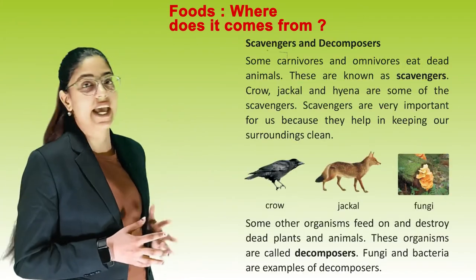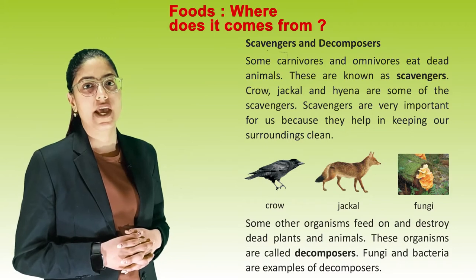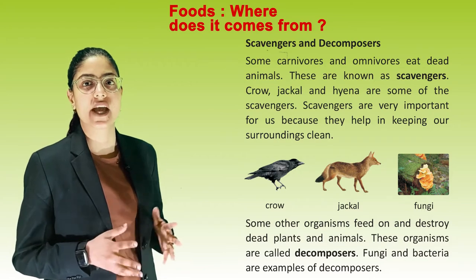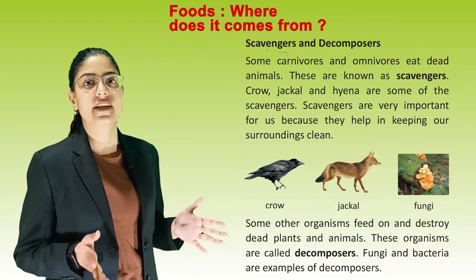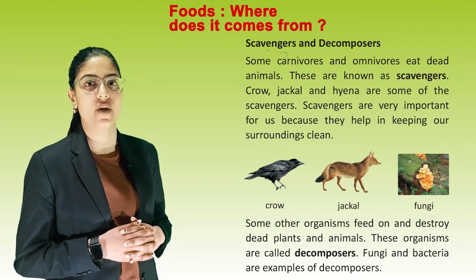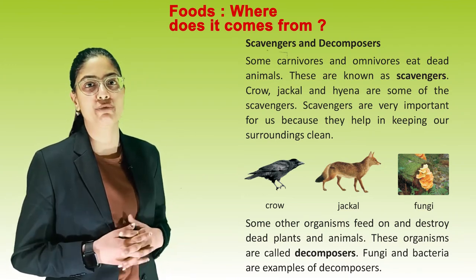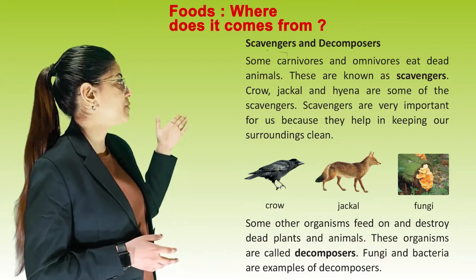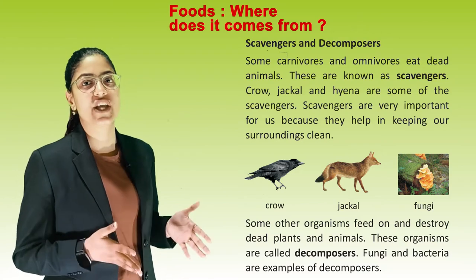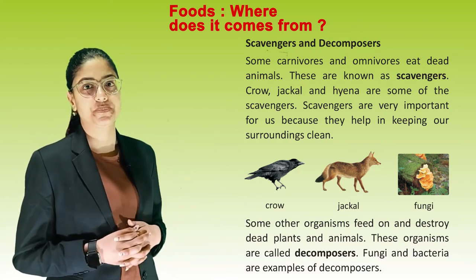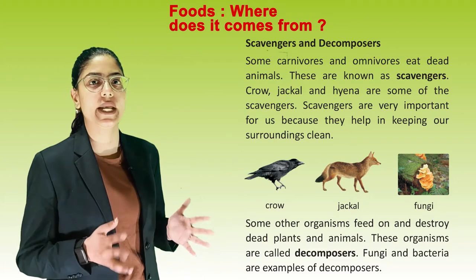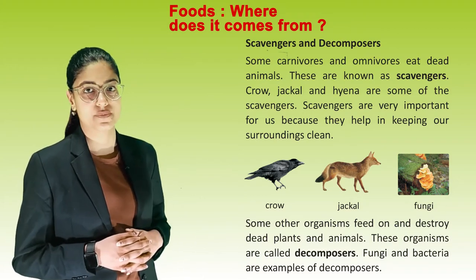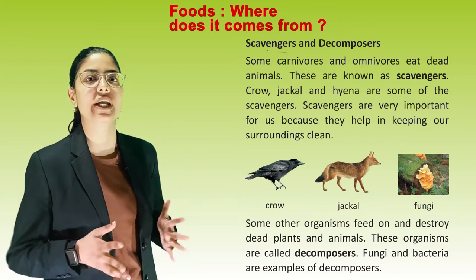Scavengers and decomposers. Some carnivores and omnivores eat dead animals; these are known as scavengers. Crow, jackal and hyena are some of the scavengers. Scavengers are very important for us because they help in keeping our surroundings clean. Some other organisms feed on and decompose dead plants and animals; these organisms are called decomposers. Fungi and bacteria are examples of decomposers.